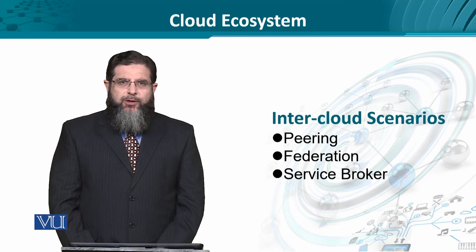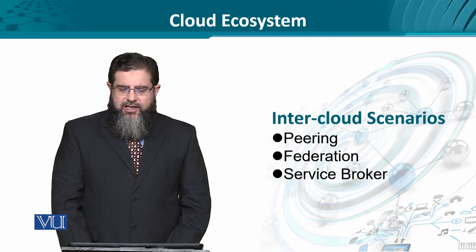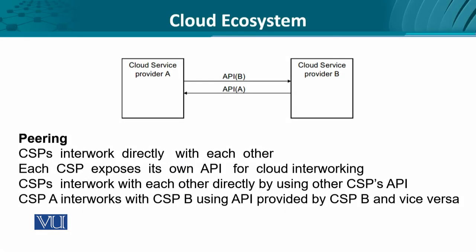The internetworking scenarios for clouds could be peering, federation, and brokerage. Let's look at each one in turn. So we have two service providers, A and B, which have exposed their APIs for accessing their services. These two come into a peer-to-peer relationship known as peering, where cloud service providers connect to and interwork with each other using the APIs provided by both.